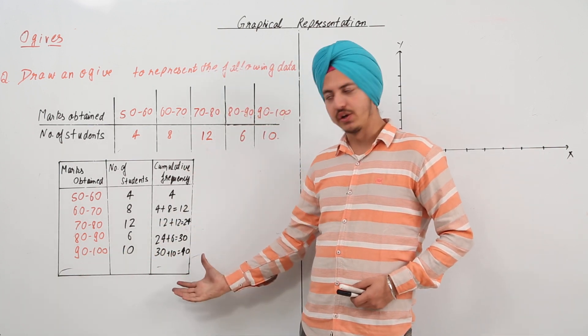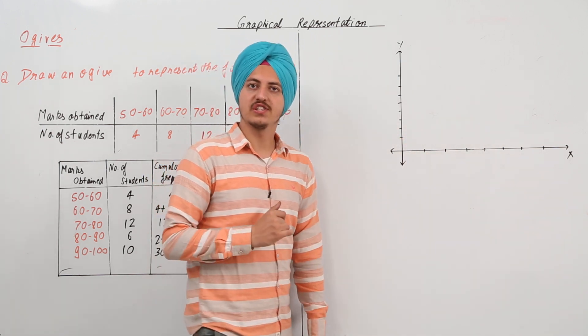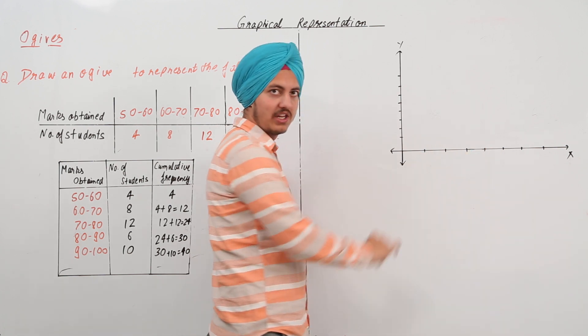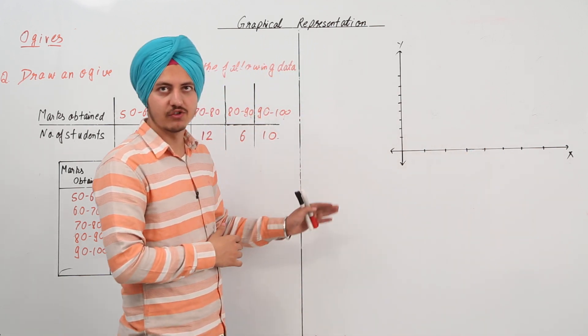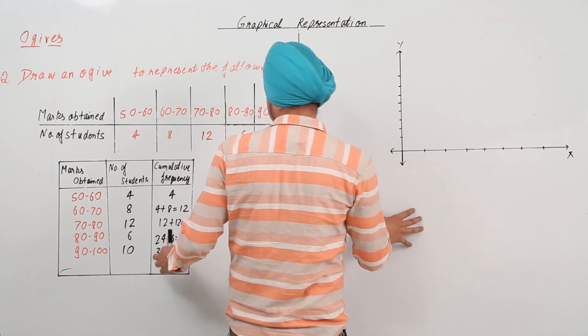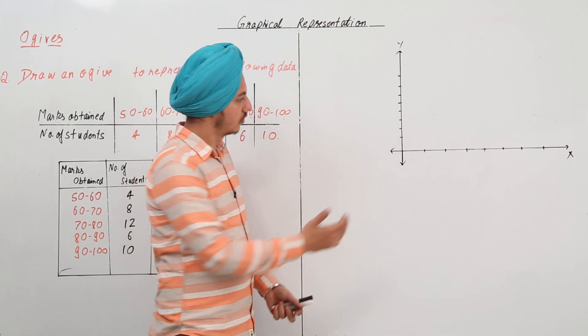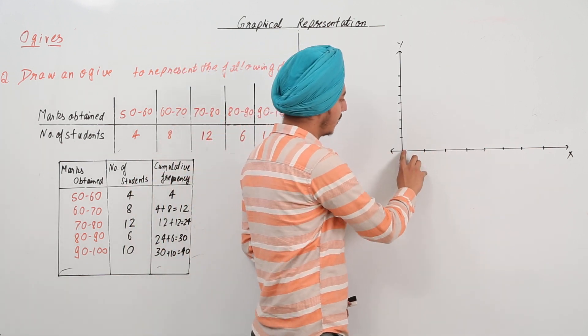Now, we've got the cumulative frequencies and all we have to do now is represent that on the graph. So, first of all again, we will have to mark the x-axis and the y-axis numerically. What we have to do over here is that we know the graph starts from 50.